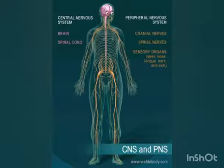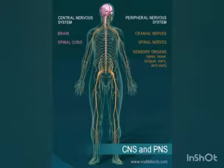The next system we are going to see is the nervous system. The nervous system controls the different organs in our body — all the functions in our body are controlled by the nervous system, which is very important. The brain, the spinal cord, and the nerves form the different parts of our nervous system.